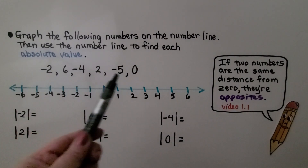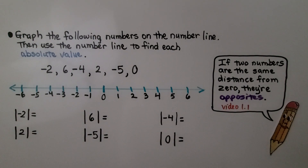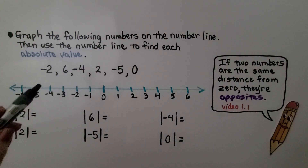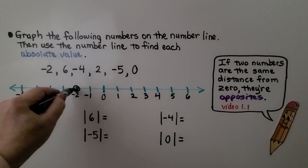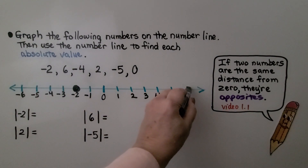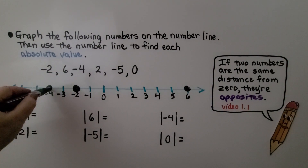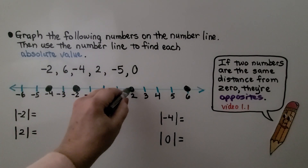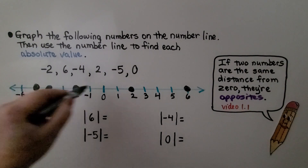Here we have some integers and a number line. We need to graph the following numbers on the number line, then use the number line to find each absolute value. The first one is negative two. Then we have positive six, negative four, positive two, negative five, and zero.